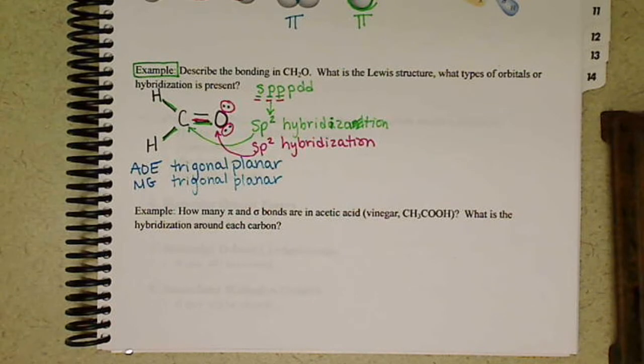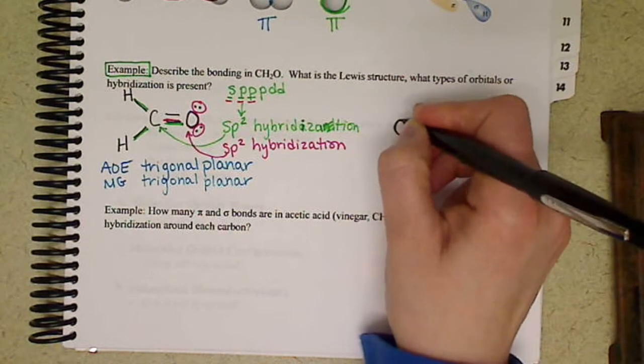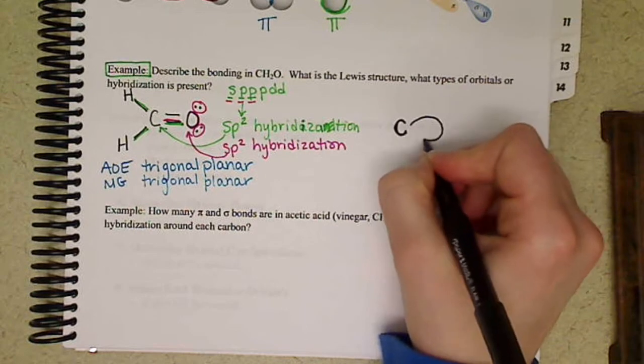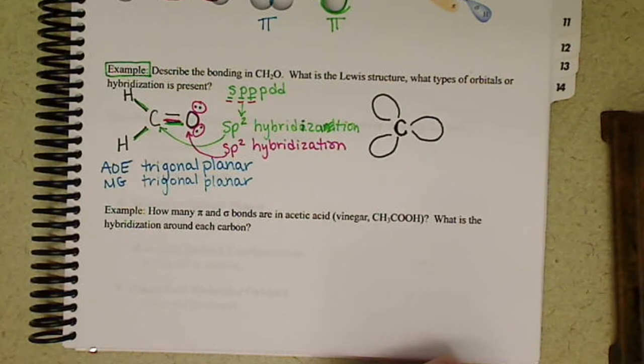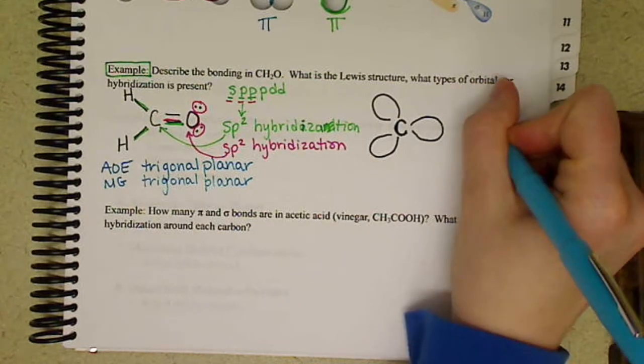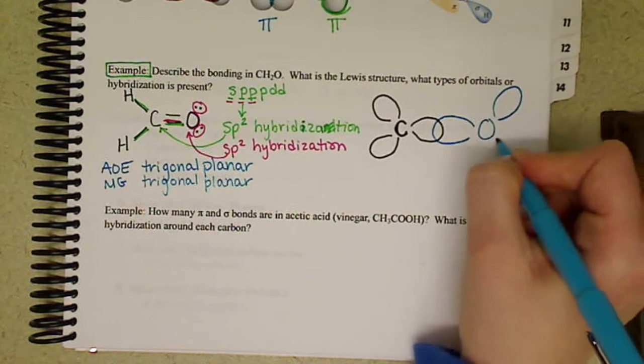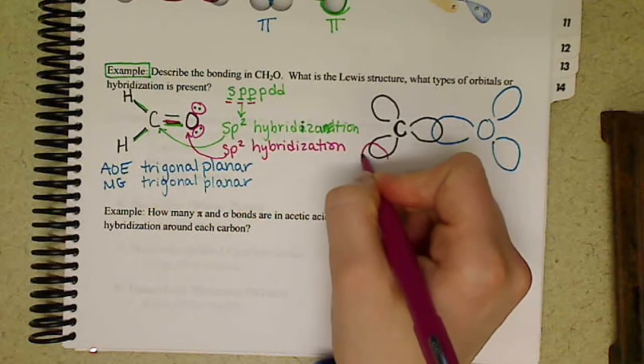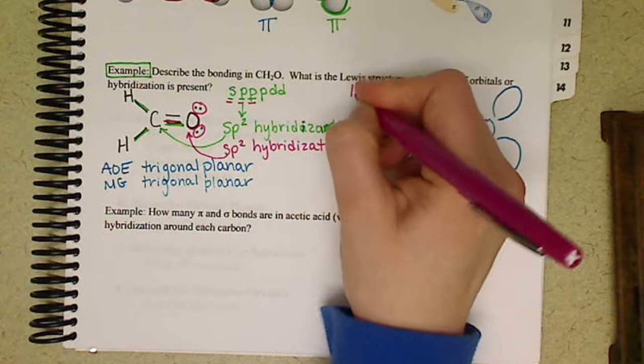So if we were to draw out these overlappings, we have carbon here. I'm going to try and color code this. Carbon is sp2 hybridized. So it's going to have three lobes for the sigma bonds. Oxygen for its sigma bonds will also be sp2 hybridized. So it will have three lobes.